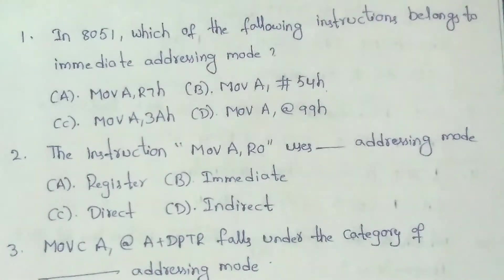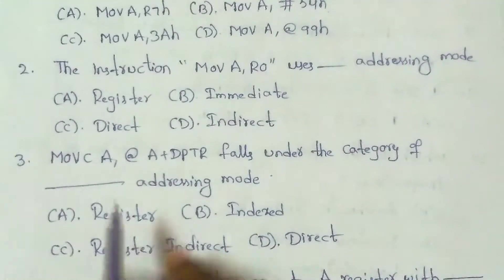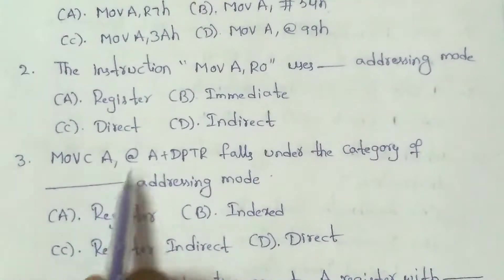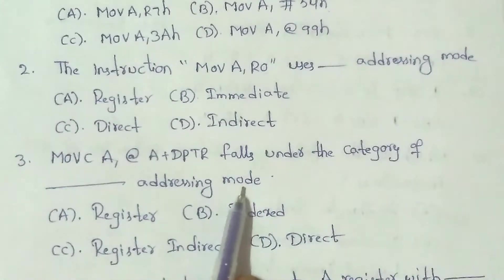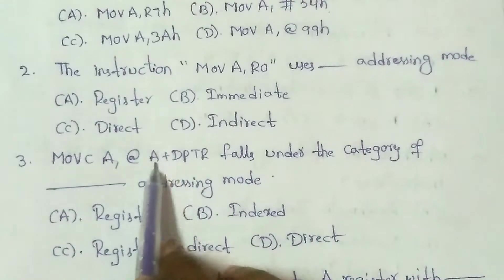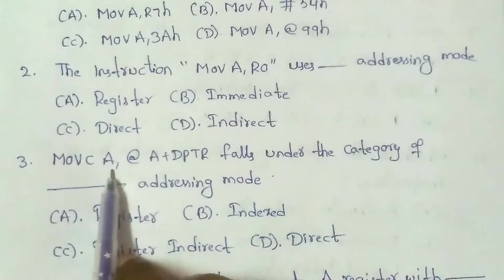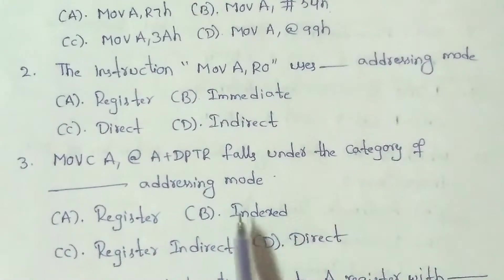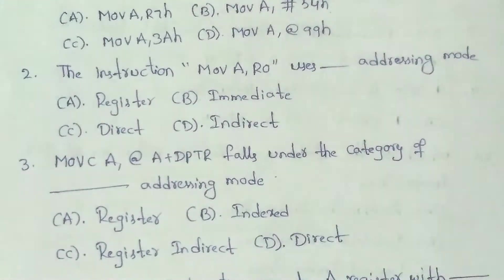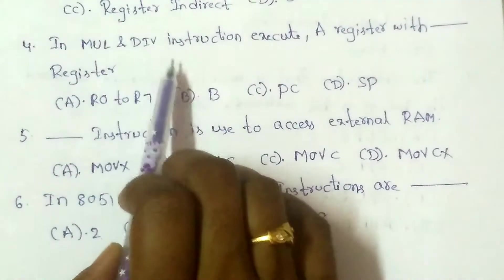The instruction MOV A, @A+DPTR falls under which addressing mode? The answer is option B: indexed addressing mode, because it uses a base register plus offset to access memory.